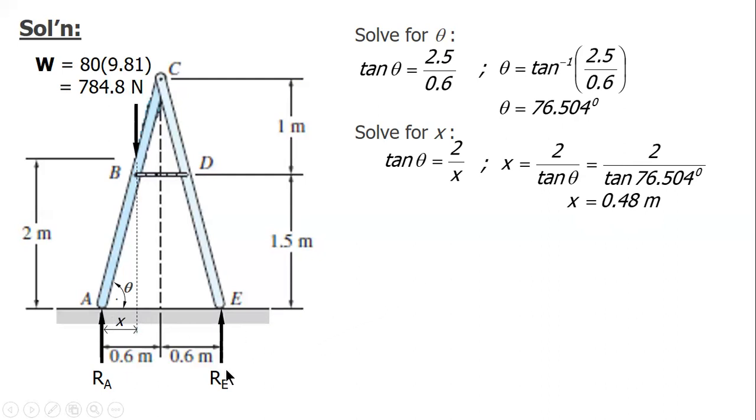Now we can solve for RE or RA. Sum up moment at A, and counterclockwise moment denoted as positive. We only have two forces: RE times perpendicular distance or moment arm 1.2, and weight moment arm of X which is 0.48.